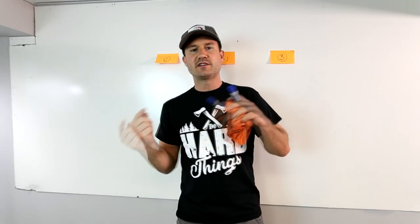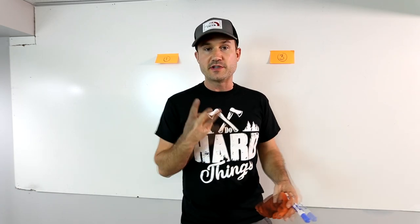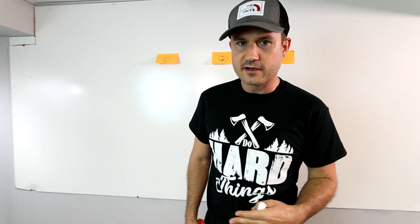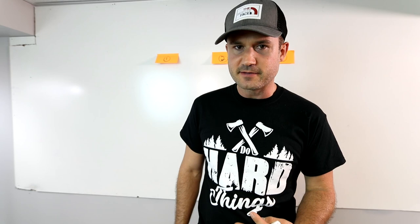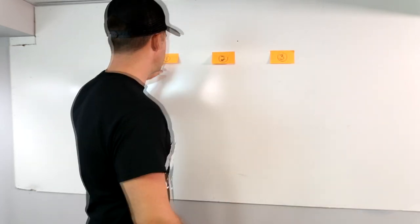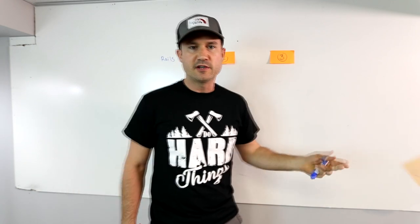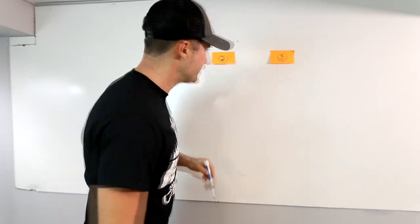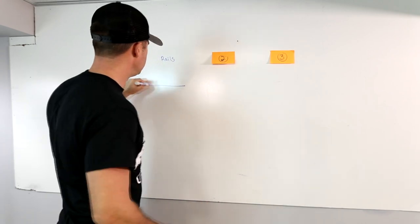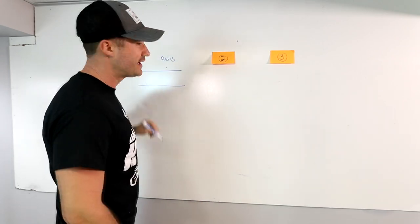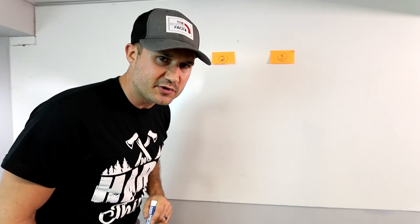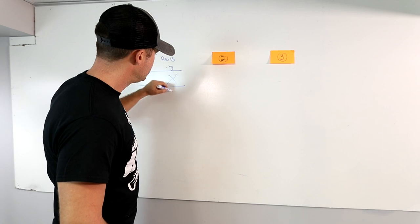We'll get back to the vlog in a little bit, but I'm going to go through these three things right now. I've learned this stuff from a lot of trial and error, a lot of headache and frustration. So the first one is rails — having rails set up on your business. What does that mean? It's not just your business; you can put it in all different areas, but specifically these are rails for your business.